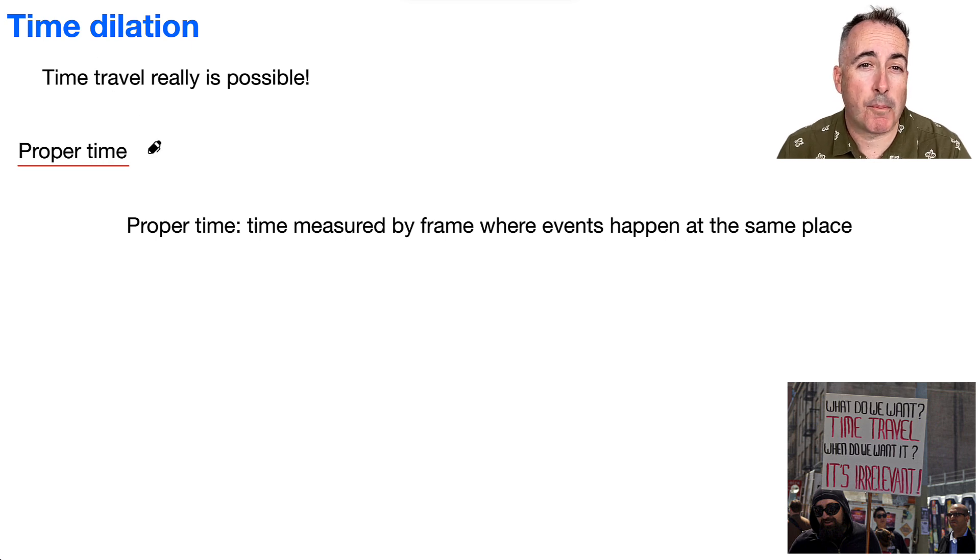First of all, we need to learn about what's called proper time. We're going to call that delta T zero. That's what we're going to say is proper time. Proper time is the time that's measured by the frame where the events happen at the same place. So what do I mean by that?